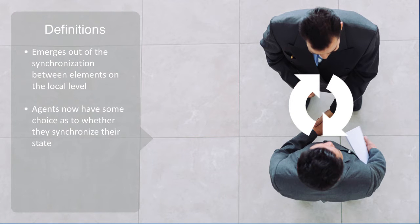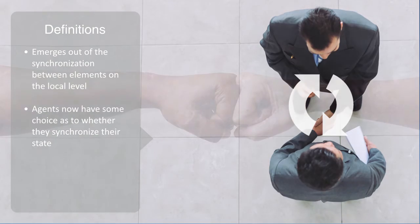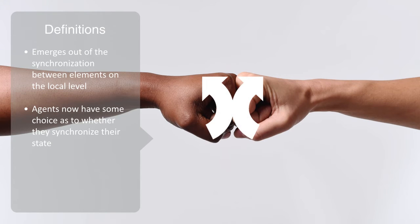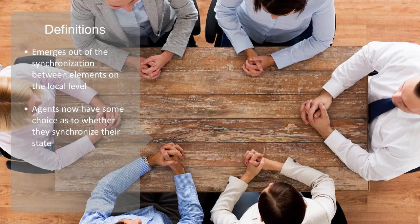Agents now have some choice as to whether they synchronize their state with other agents locally, what we call cooperation, or inversely, they may choose to adopt an asynchronous state with respect to other agents, what we call competition. Cooperation and competition between agents don't occur randomly. It is the product of both local and global forces, as the incentives for an agent to choose one or the other are often built into the context of the situation they are engaged in.